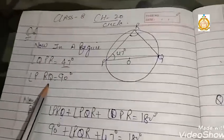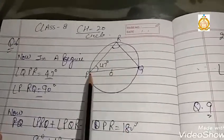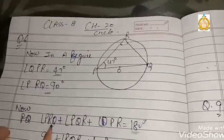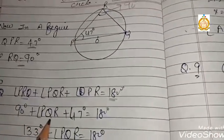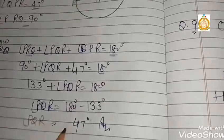Question number six: In the given figure, triangle PQR is inscribed in a circle with center O. If angle QPR is 47 degrees, find angle PQR. Since PR is a diameter, angle PRQ equals 90 degrees (angle in a semicircle). So 90 plus angle PQR plus 47 equals 180 degrees, giving angle PQR equal to 43 degrees.